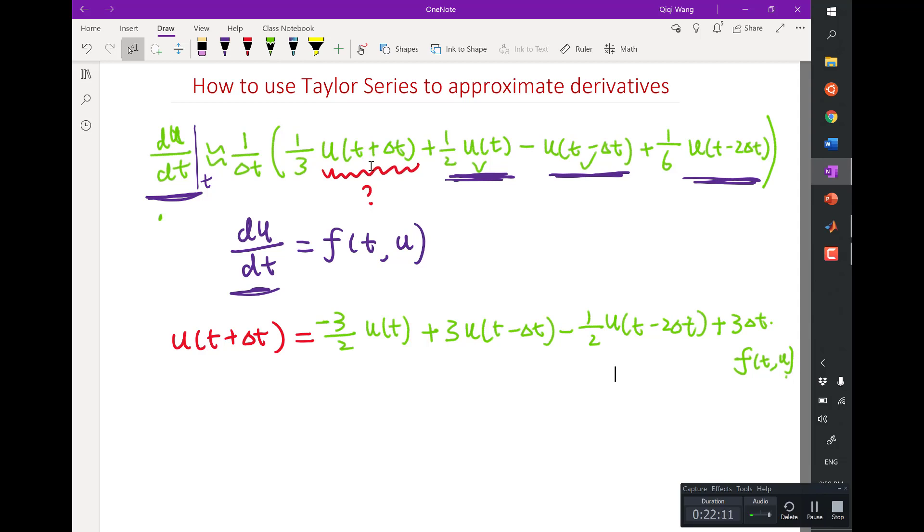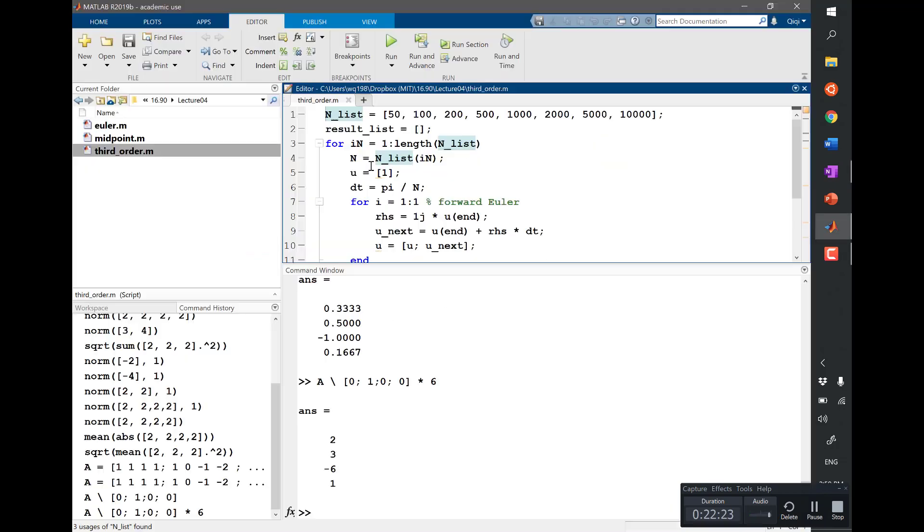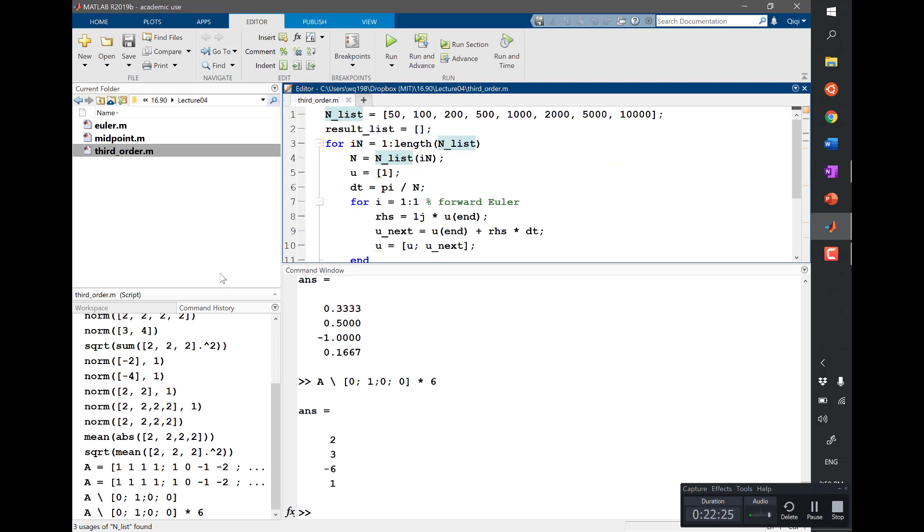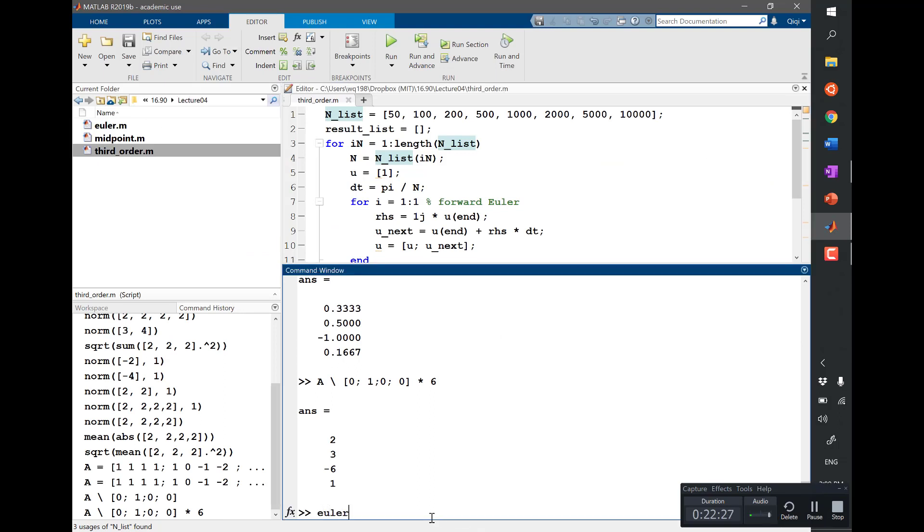We didn't look at the error term. But we know we have canceled the first order term. We canceled the second order term. I mean, any term that remains is either third order or higher. So we expect to see a line. Let's actually run the Euler first.